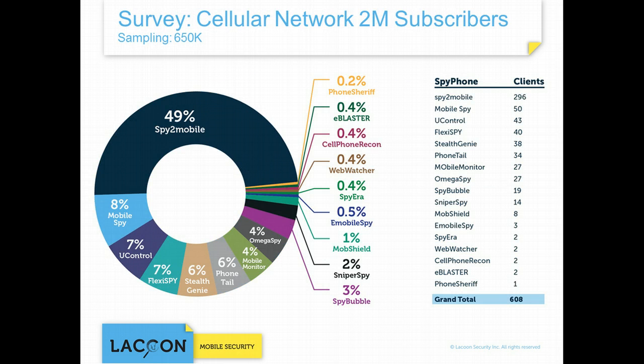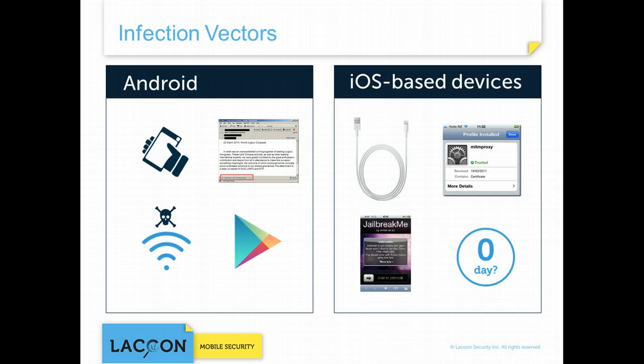The analysis also tracked the families of mobile surveillance tools. While one specific commercial tool, SPY2 Mobile, was dominant, nearly half of the compromised devices were infected with 16 other different families of tools. Infection of mobile devices can be done remotely, such as via receiving an email containing the malware, or locally, for example through the usage of a USB cable.